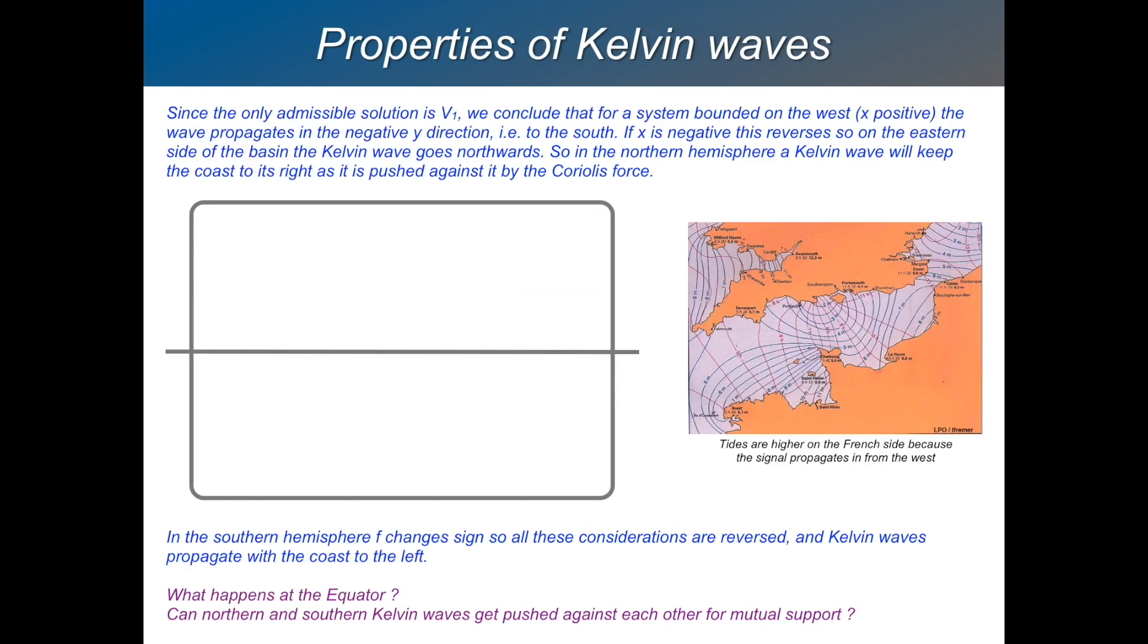Let's try and extend that now. So what we've done so far is we've got a Kelvin wave on the western side of an ocean basin. And our coordinate X was positive towards the centre of the ocean basin. How about if we put it on the other side of the ocean basin? So our coordinate X will be negative towards the centre of the ocean. So we've changed the sign of X in our equations. And if you go through the same logic that I've just been through, with V1 and V2 and everything, you'll find that that change of sign leads us to the conclusion that the wave must be propagating northwards.